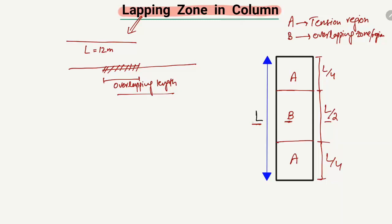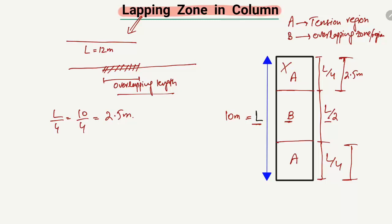For example, if the height of the column is 10 meters, where can we provide the lapping of the bars? L/4 means 10 divided by 4, which equals 2.5 meters. So 2.5 meters from the top face of the column and 2.5 meters from the bottom — we cannot do any kind of overlapping in these zones. These are the non-overlapping zones.